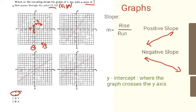To explain why the others don't work: graph X has a slope of three-halves — rising three and running two — so it doesn't match. For graph Z, even though the slope might match, it doesn't pass through the point (3, 2). Sometimes one condition or the other will rule out a line.